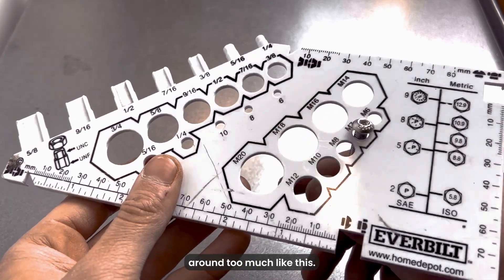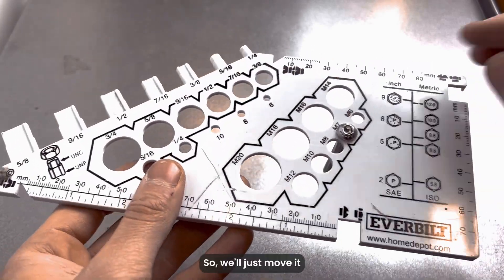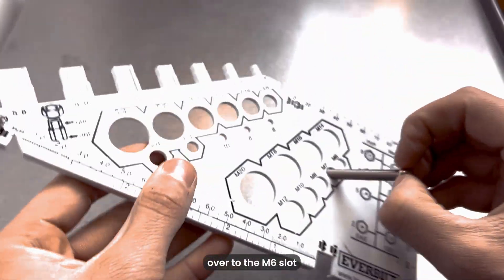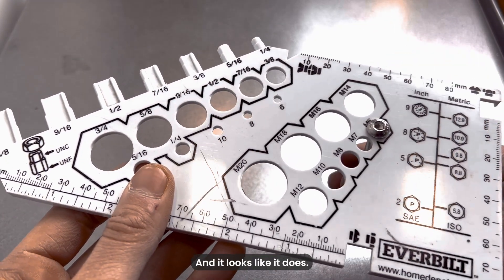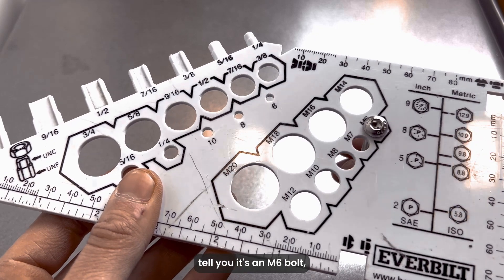So we'll just move it over to the M6 slot to see if it fits better, and it looks like it does. That'll tell you it's an M6 bolt, which is about a six millimeter width.